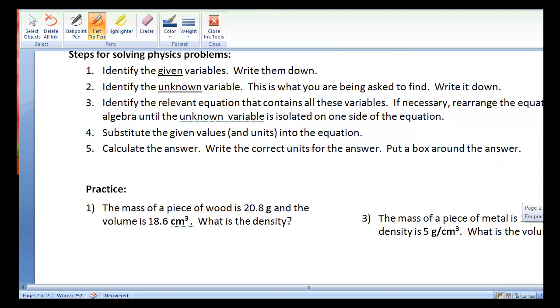So, let us take a look at this practice. The mass of a piece of wood is 20.8 grams, and the volume is 18.6 cubic centimeters. What is the density? So, we can first identify the given variables, write them down. Step one.